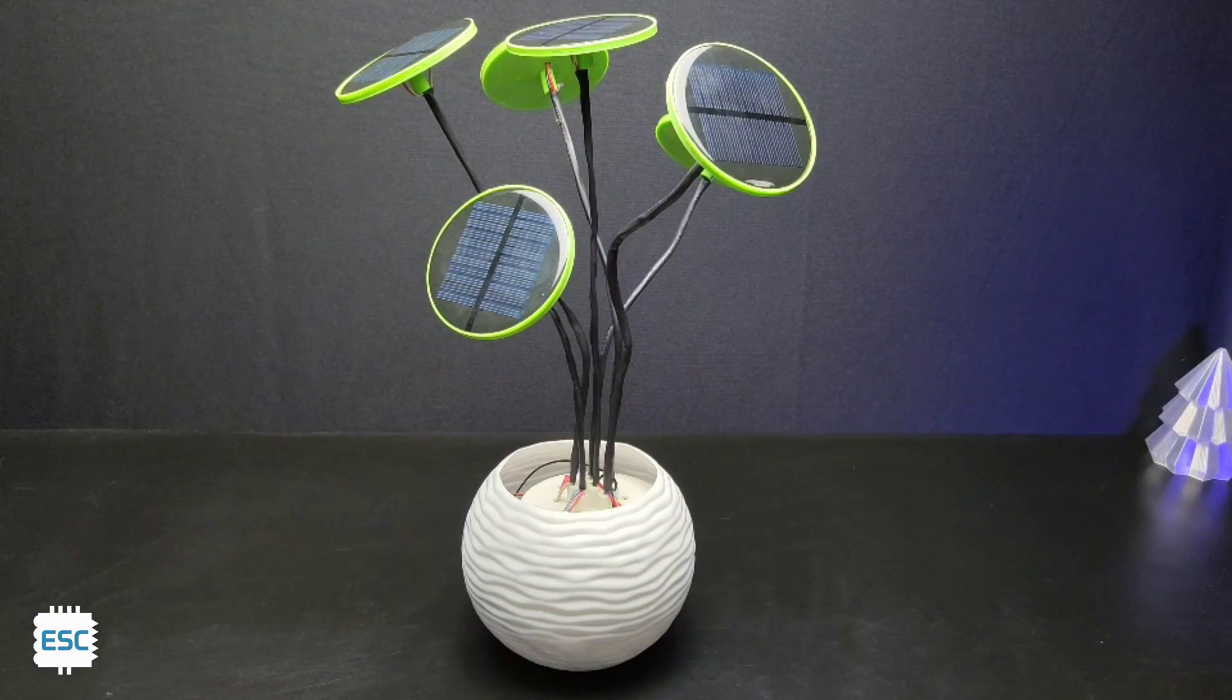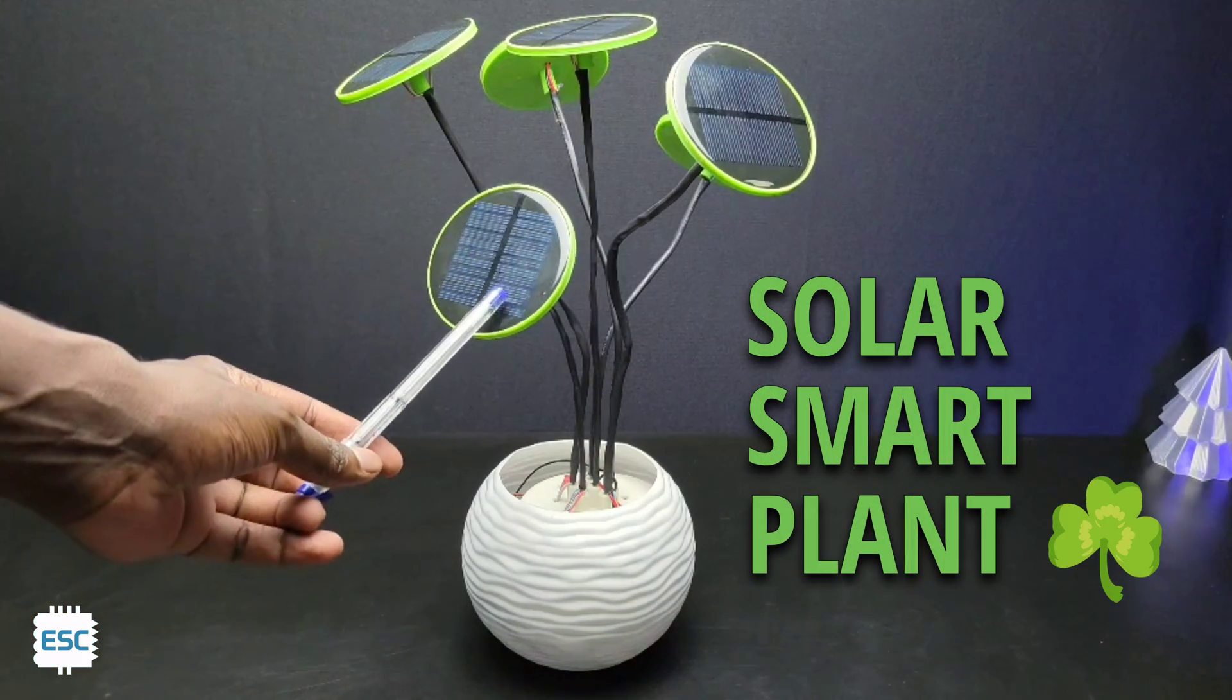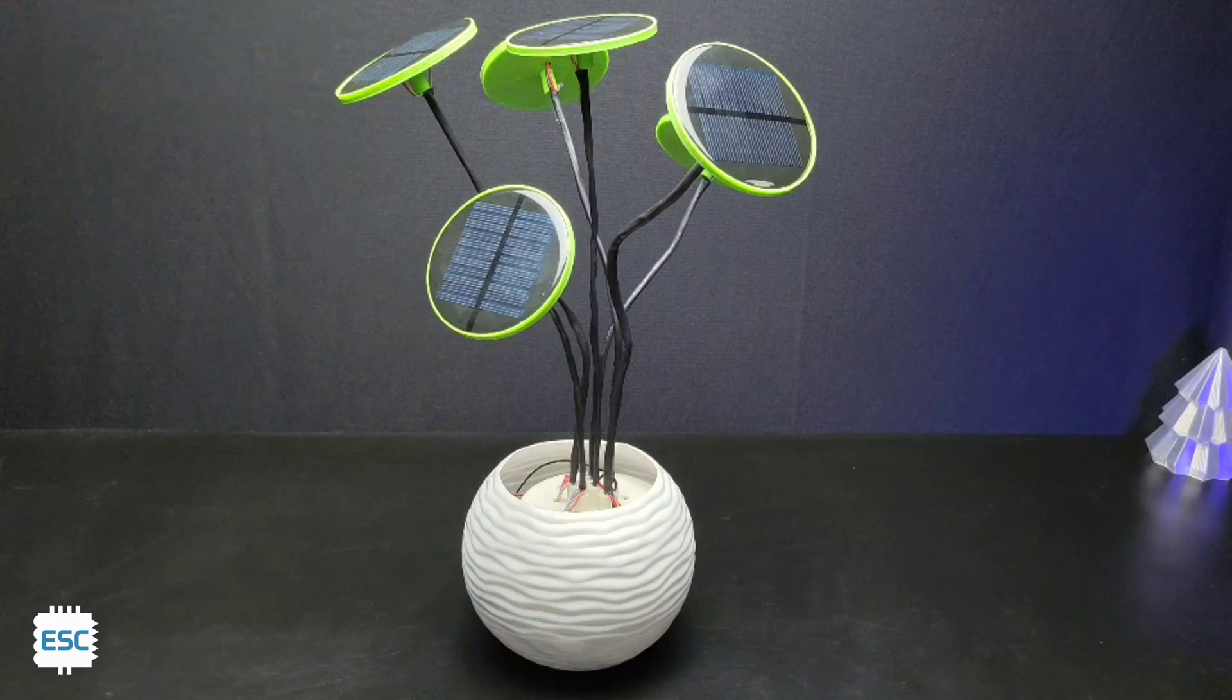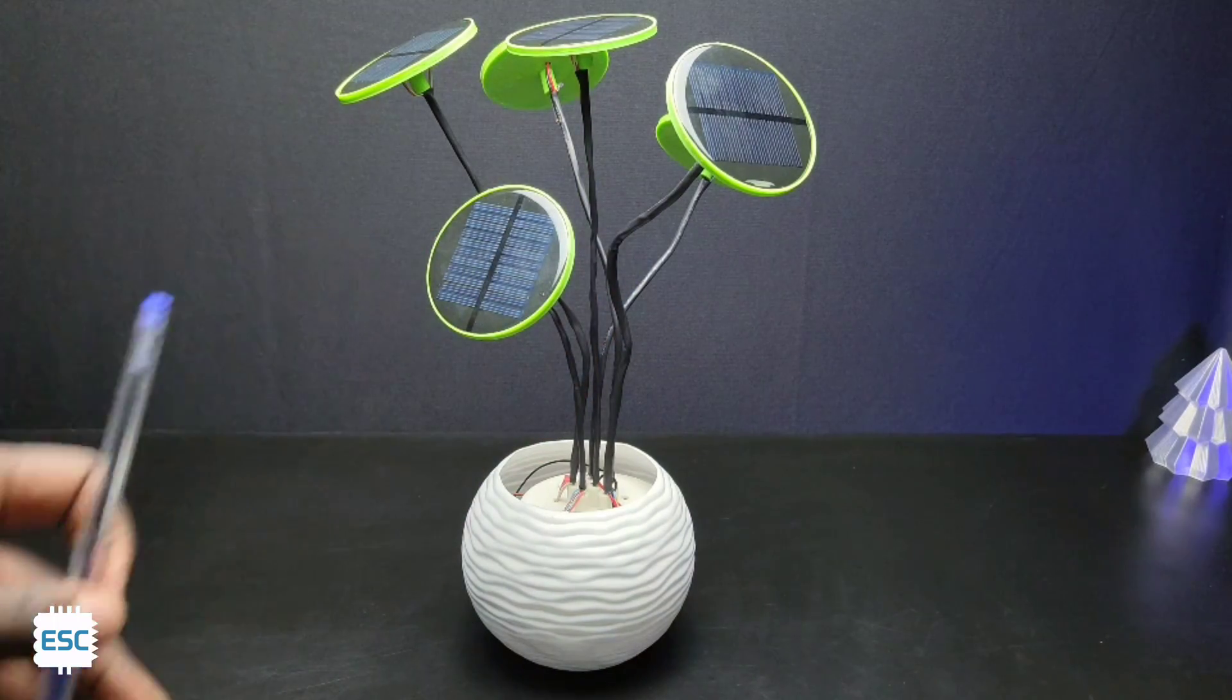Hello there, this is a solar smart plant. As you can see here, the leaves of this artificial plant are actually round shaped solar panels. These solar panels will help to charge the plant's battery.